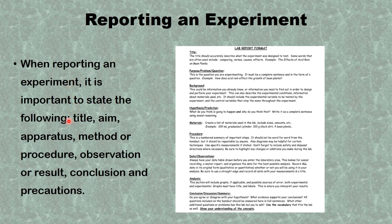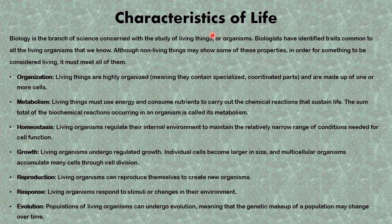After we've done the experiment, we need to report it. When reporting an experiment, it is important to state: the title, aim, apparatus, method or procedure, observations or results, conclusion, and precautions. This is the standard lab report format. Whenever a scientist carries out an inquiry and experiments have been done, it must be written up so that any other person reading the report can do exactly the same thing and produce the same results.